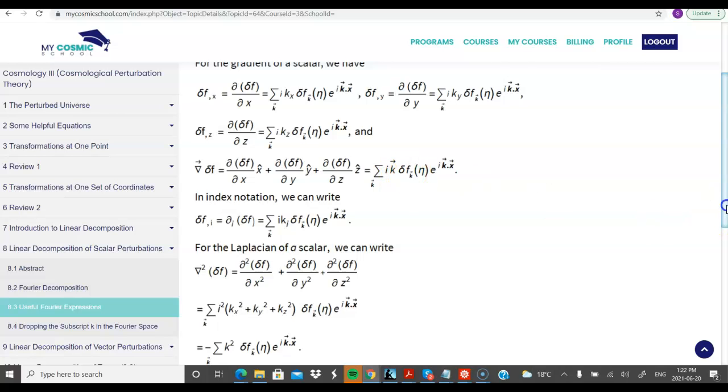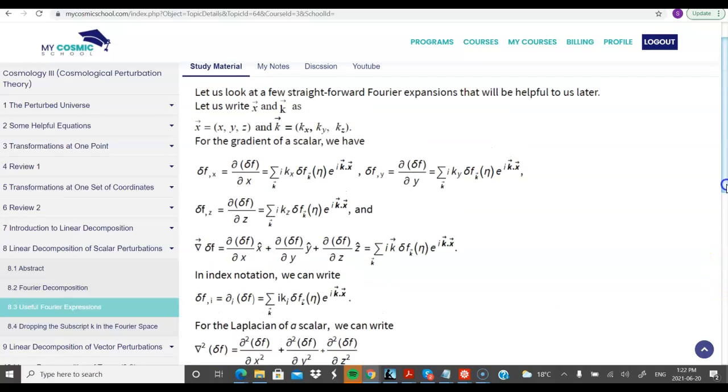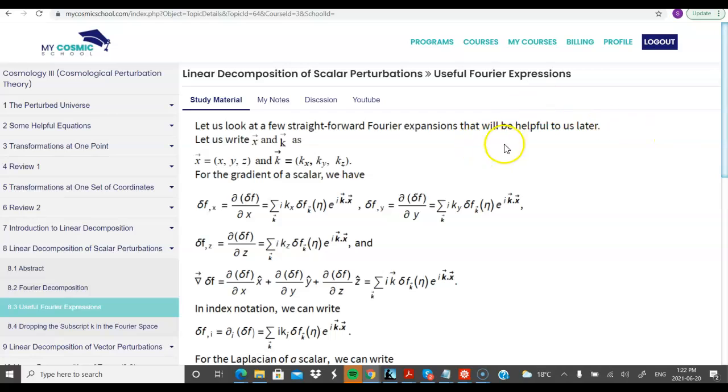Similarly, when you take Laplacian, then in Fourier space, the Laplacian of delta f becomes minus k square delta f k. So these two are helpful expressions that we will be using later.